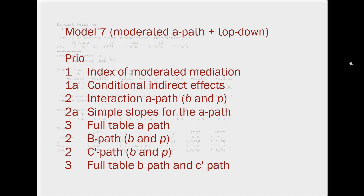Here is a short summary for the top-down approach. Priority one — you should report this all the time: the index of moderated mediation. If the index of moderated mediation is significant, priority two is the next step you could report if you want to report a little bit more, including whether the interaction for the A path is significant. And priority three covers additional information you could report. So much for the top-down approach.